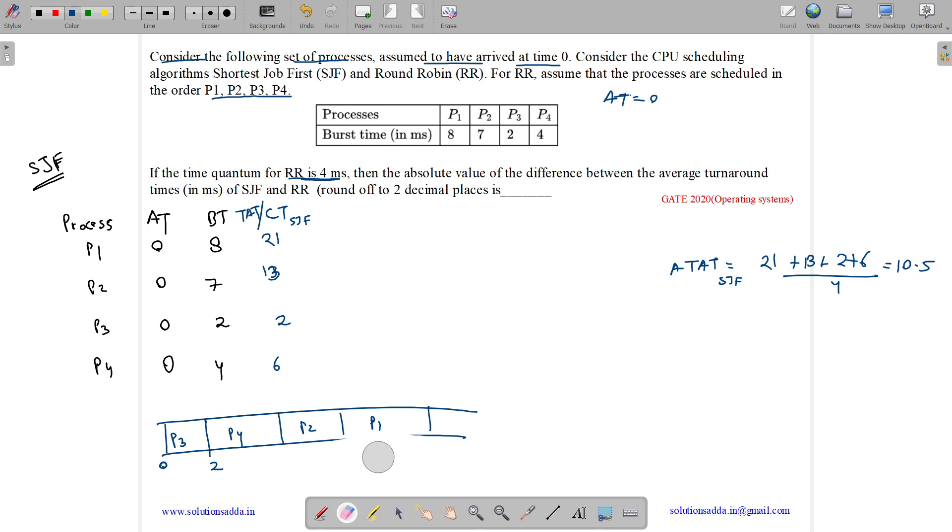Now let us draw the Gantt chart for round robin. We have turnaround time and completion time remains to be same for round robin also, as arrival time is zero. Now we have Gantt chart - this is for SJF and then round robin. So at t equals zero all are available, but we should do it in the order P1, P2, P3, P4.